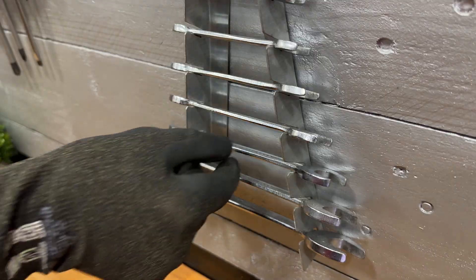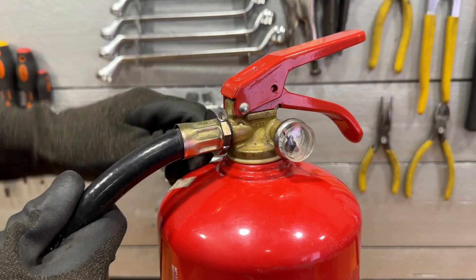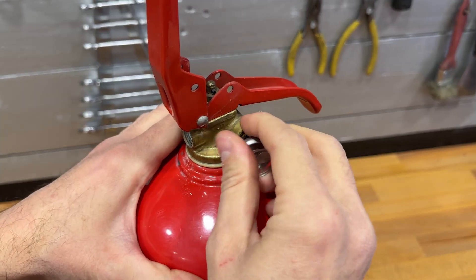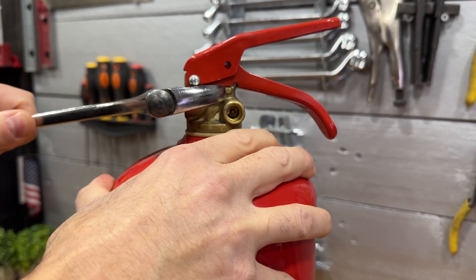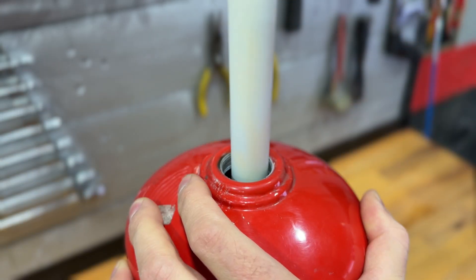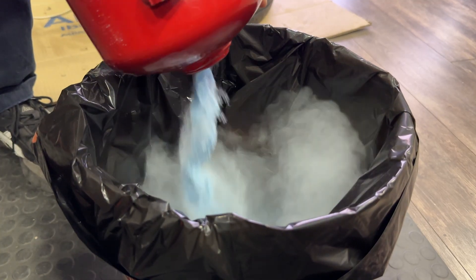We start by taking this old fire extinguisher. We disassemble the hose, the pressure gauge, and the valve. We'll need to apply a little force to loosen it. We empty the powder inside.